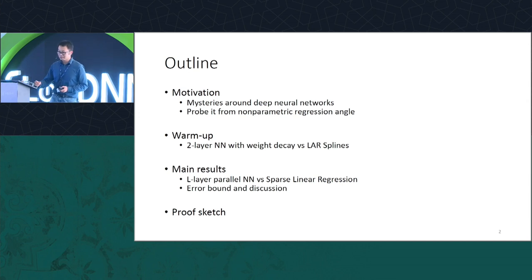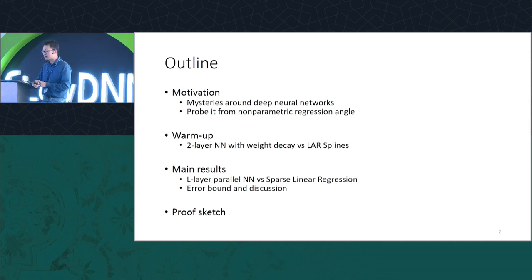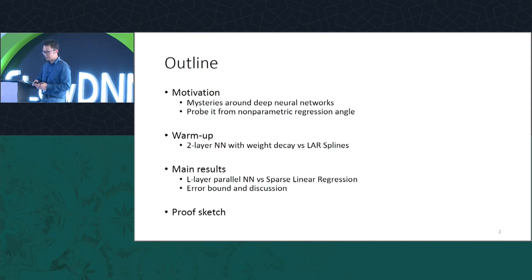I'll start with the motivation and the scientific questions we're trying to ask, probing this through the non-parametric regression angle. I'll give some discussion on two-layer neural networks — how things work and what we can do with just two layers — before moving on to the more general setting with multiple layer neural networks. If I have time, I'll also explain the interesting aspects of the proof toward the end.